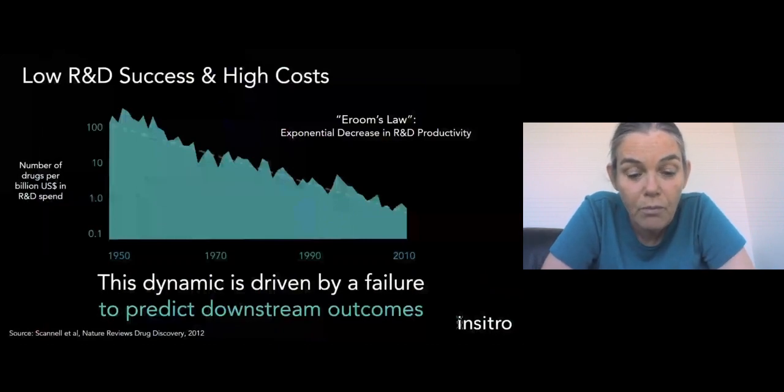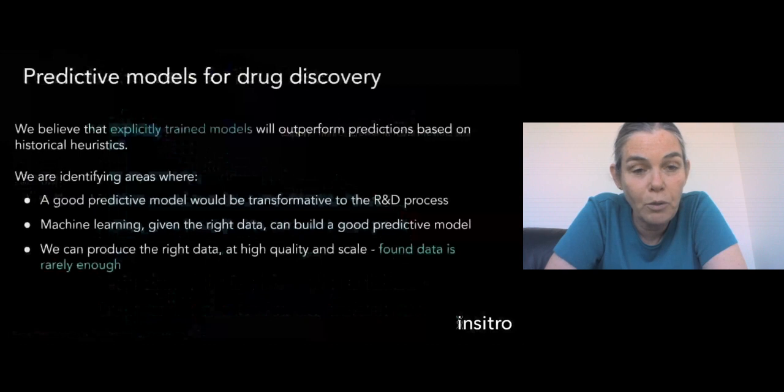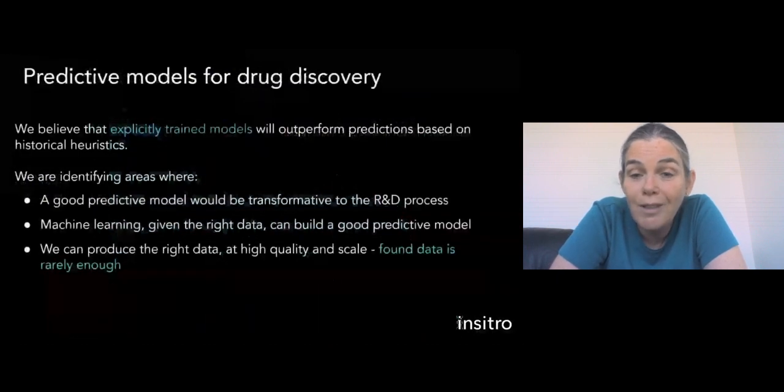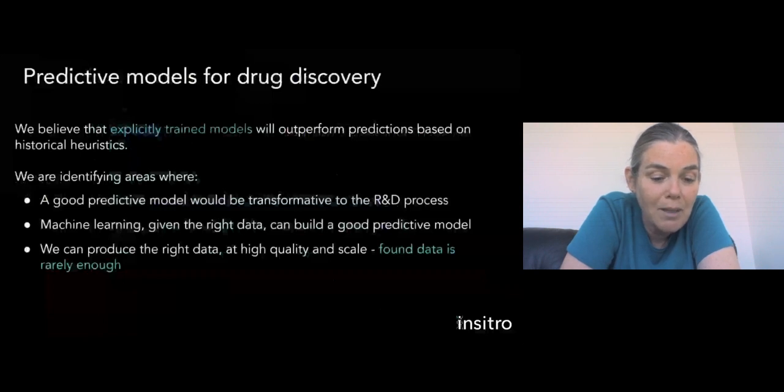So our goal in what we're doing is to look for these pivotal forks in the road where the decisions are currently made by historical heuristics or rules of thumb and rather use machine learning to explicitly train models to make these decisions more accurately. In order to do that, we're looking for places where machine learning is the right tool for the job. And very importantly, where we can produce the right data at high quality and at the right scale, because the data that you get by simply amalgamating pieces of dribs and drabs from here and there are rarely enough for driving really high quality decisions in high stakes decisions such as this.